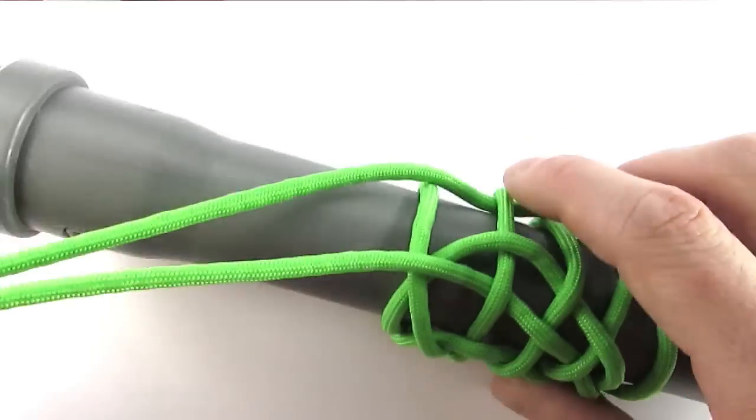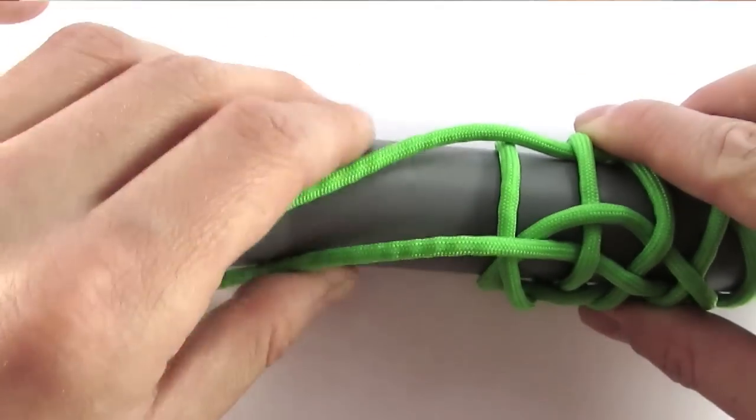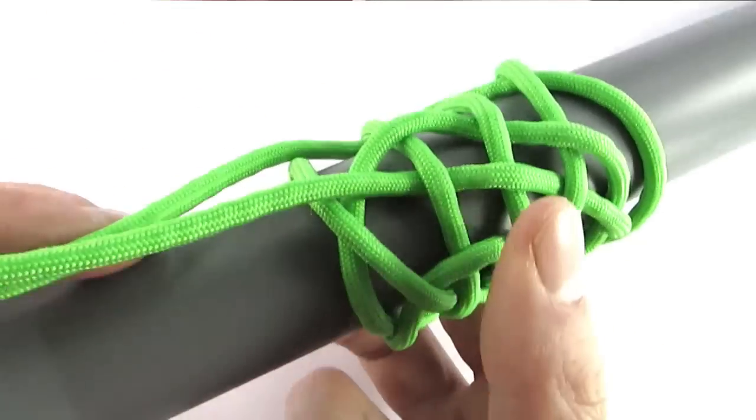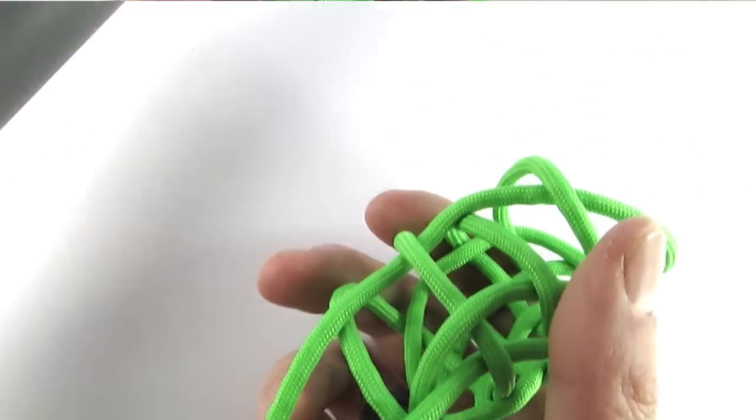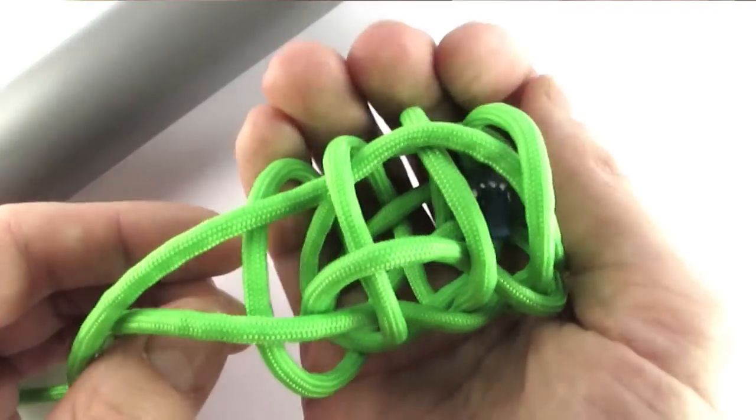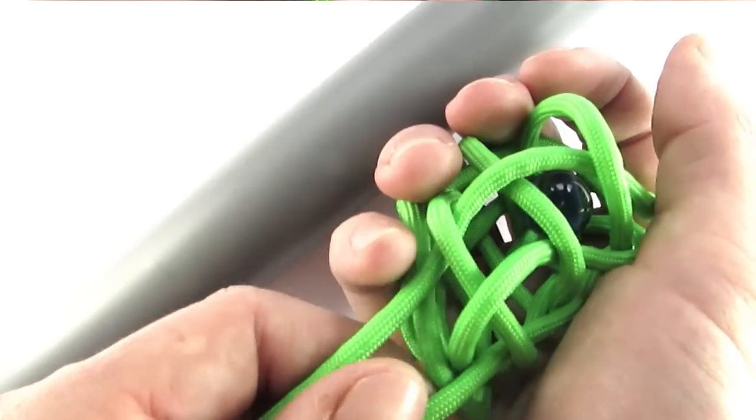At this point you have both cords on your left side and you can remove the knot from your mandrel and insert your core and then tighten the knot around the core.